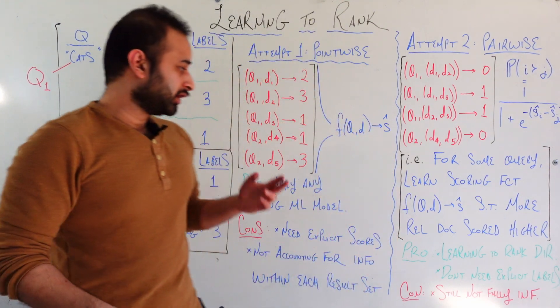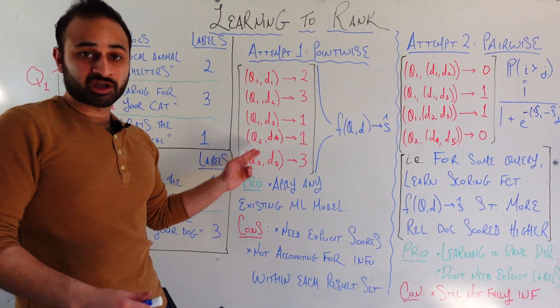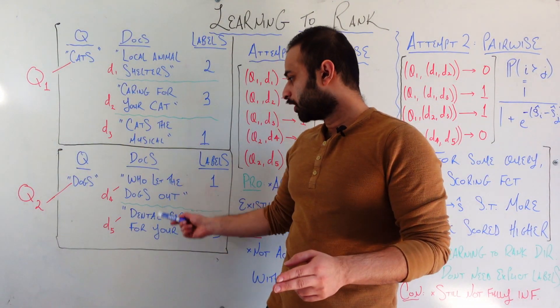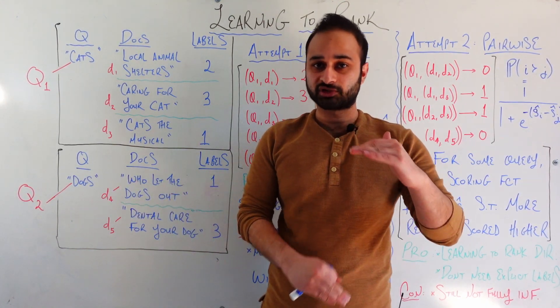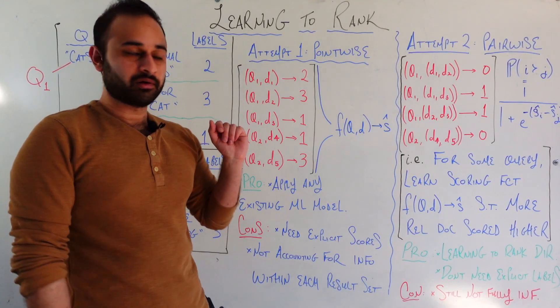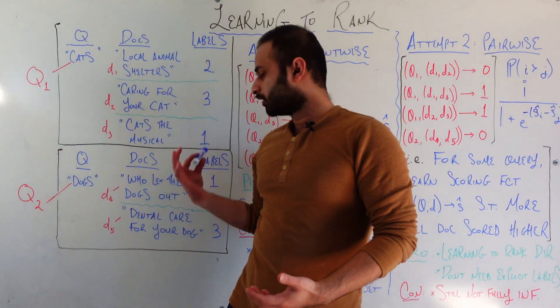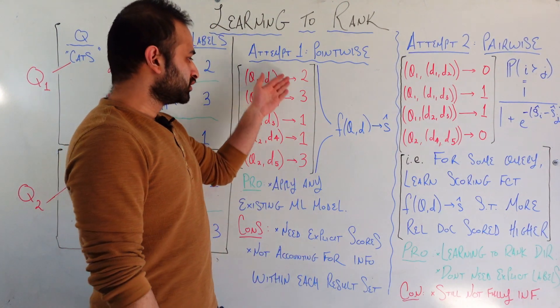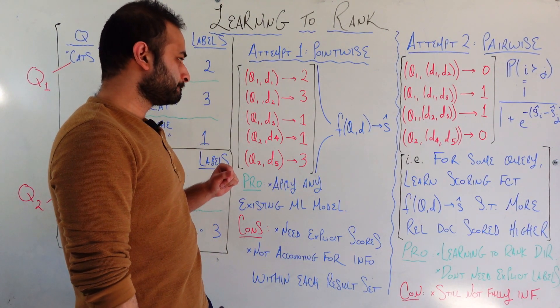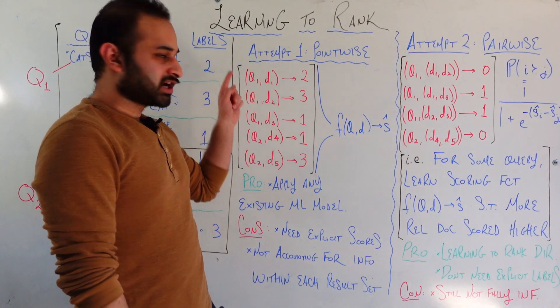That's these three documents and this query. And then we have query 2, document 4, query 2, document 5. So we have five total training examples here. And the labels for each one are simply just the relevance coming straight from this labels column behind me here. We have 2, 3, 1, 1, and 3.